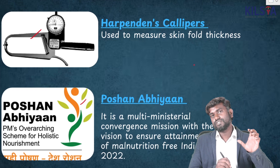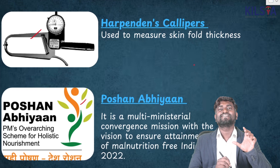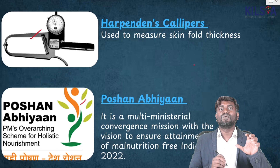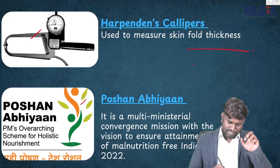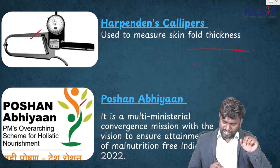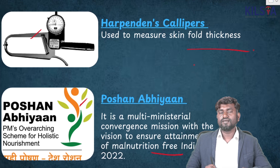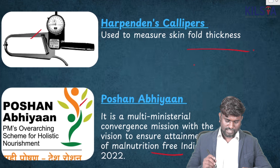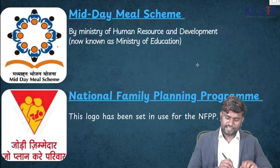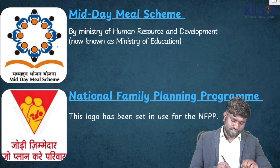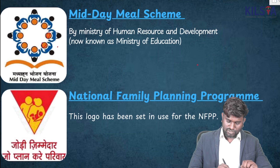This is called Harpenden Caliper, used to measure skinfold thickness. This one is called Poshan Abhiyan, used to ensure a malnutrition-free India by 2022. And this is the image of the Mid-Day Meal Scheme by the Ministry of Human Resource and Development — you can see children holding plates.